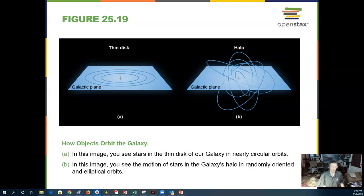How objects orbit the galaxy: in the thin disk, they go around in a flat plane. In the halo, they go above and below the galactic plane of the disk of the galaxy.